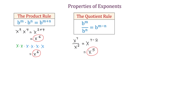we can write x to the seventh power as a product of seven x's. And in the denominator, x squared is x times x. And now if we simplify this fraction by cancelling two x's from the numerator and from the denominator, now we will have a product of five x's, which we can write as x to the fifth power.